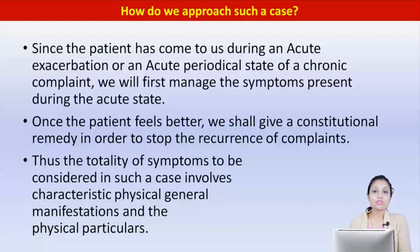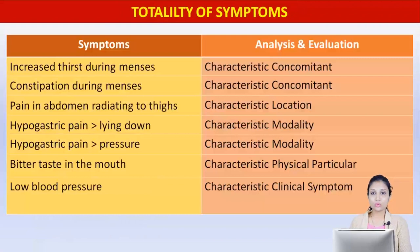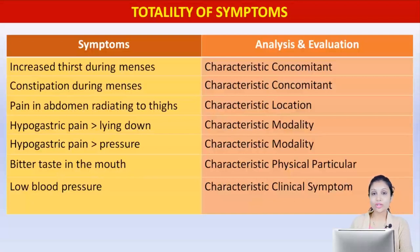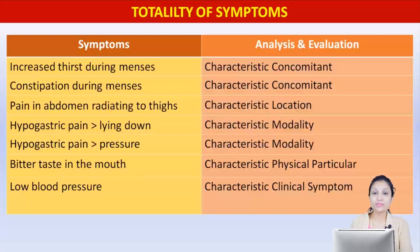Here is the totality we have formed. Let us compare and see whether it matches what you have formed for this case. The first two symptoms taken are characteristic concomitants: increased thirst during menses and constipation during menses. Two symptoms that cannot be explained by the chief complaint qualify as concomitants, and that is why they have more weightage in our totality.